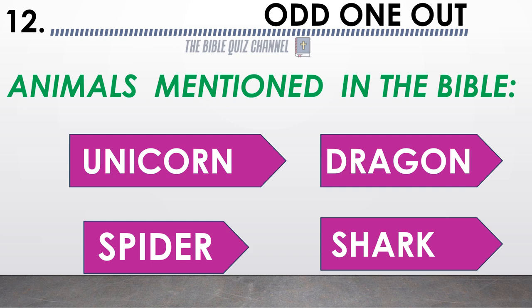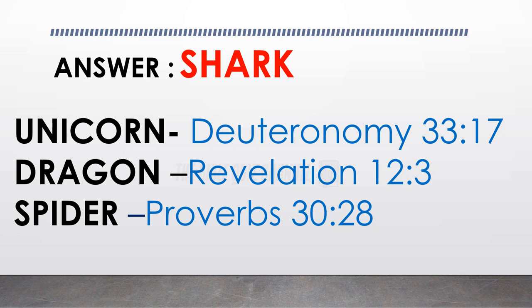Animals mentioned in the Bible — unicorn, dragon, spider, shark. Which is the odd one out? The correct answer is shark.